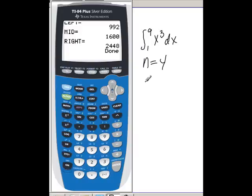So if I ran this again with n equals, let's do 32. I'll press the program key.